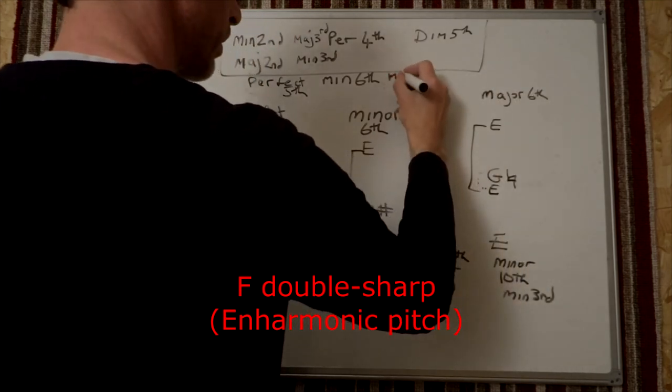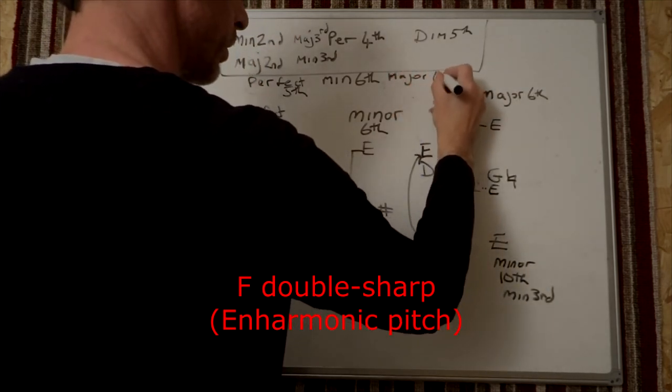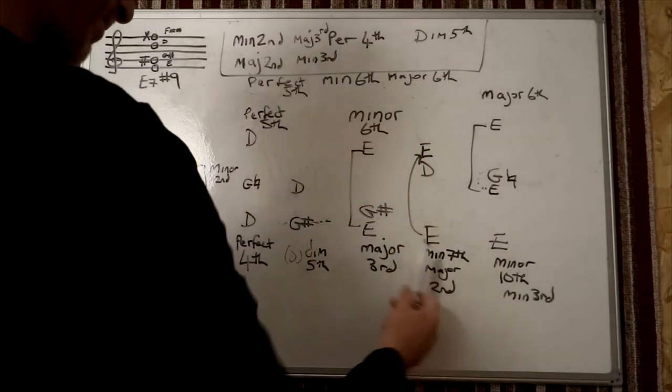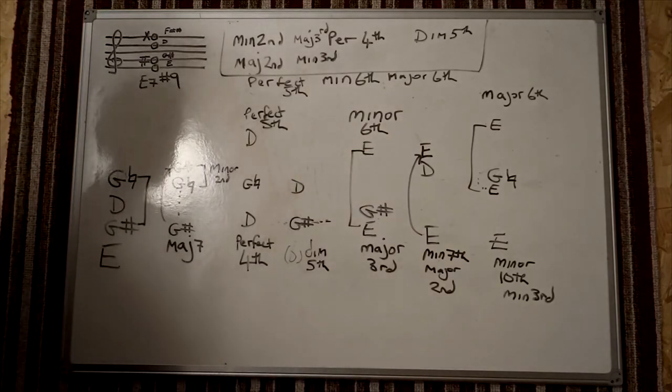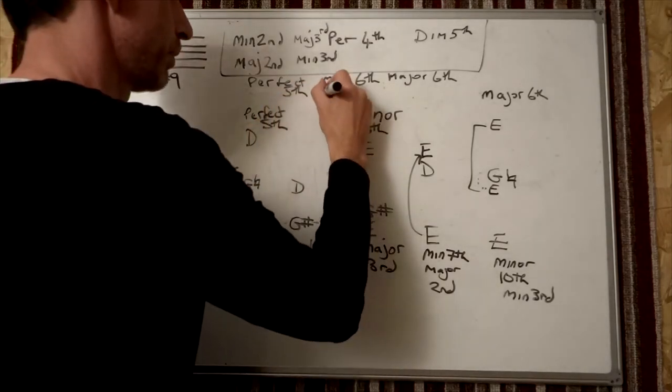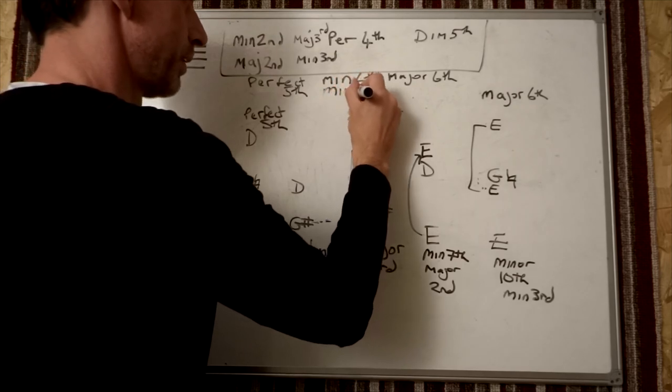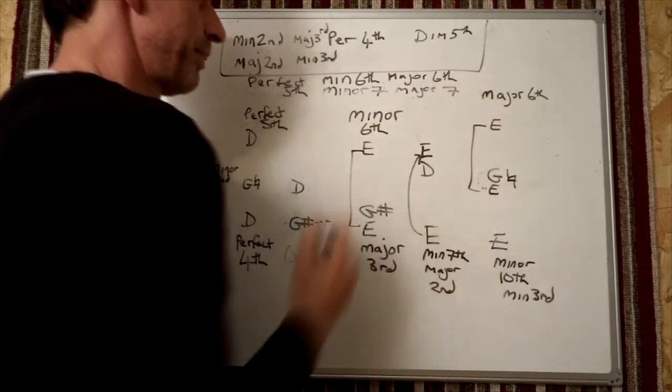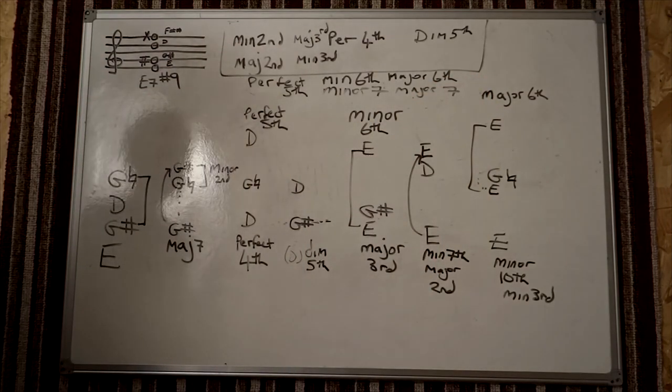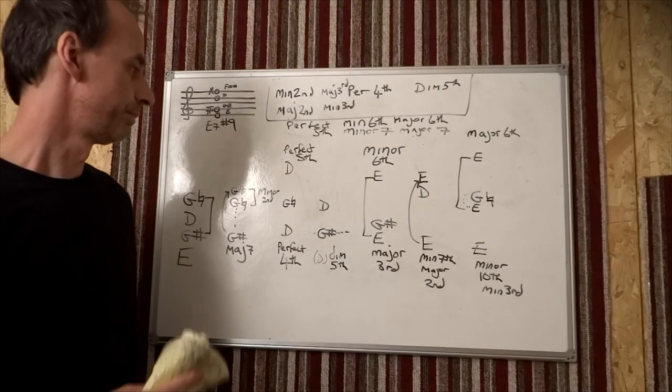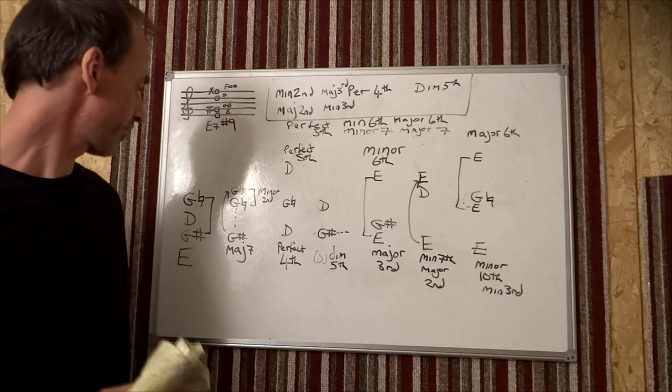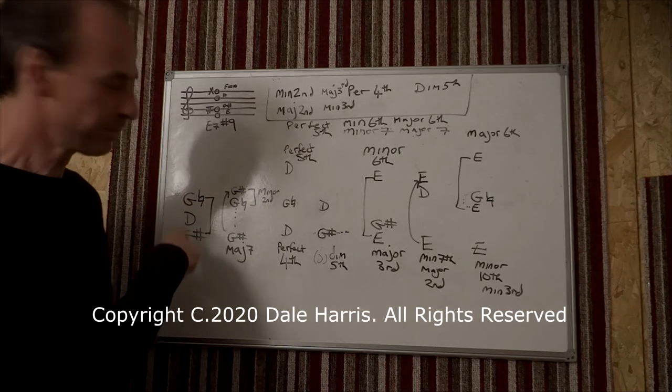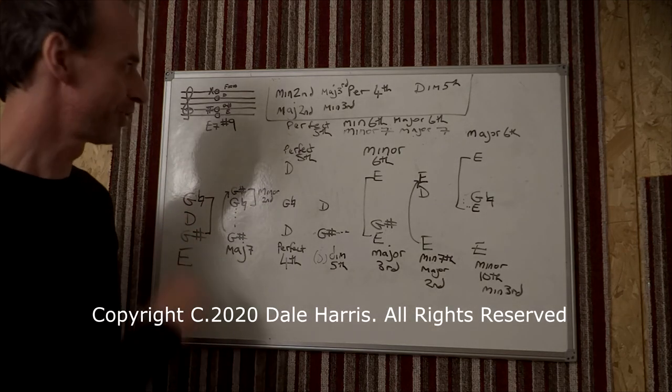And then we've already got a minor seventh and a major seventh. So we've got the full set: minor seventh and major seventh. So we've got an absolute full set. That's pretty incredible really, from just these four notes of this chord to generate all the intervals.